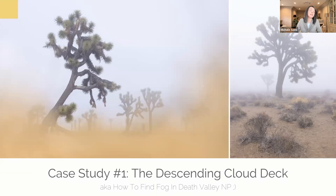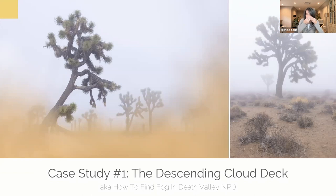Reading further about Lee Flat, I saw it was probably one of the most likely places I'd be able to find fog in Death Valley, which seemed highly unlikely. But Lee Flat is a high-elevation location — actually 5,600 feet above sea level, which is a mile high. That made it quite likely, given the right weather conditions, that I'd be able to shoot it in fog.